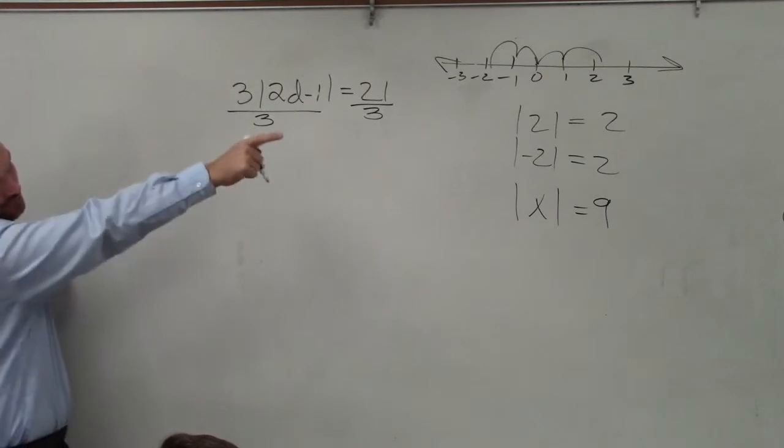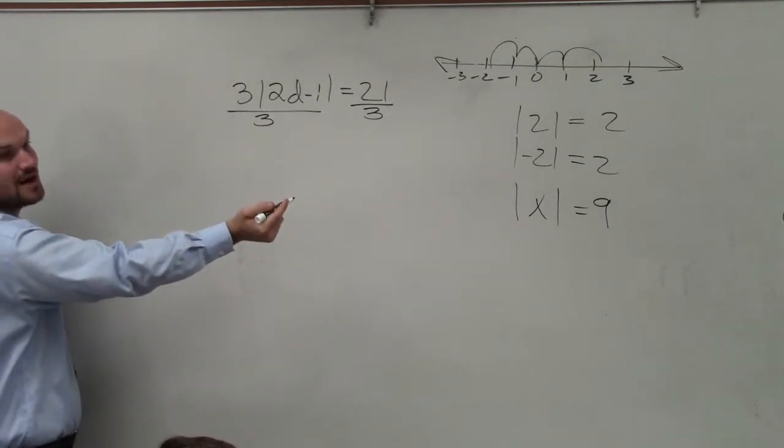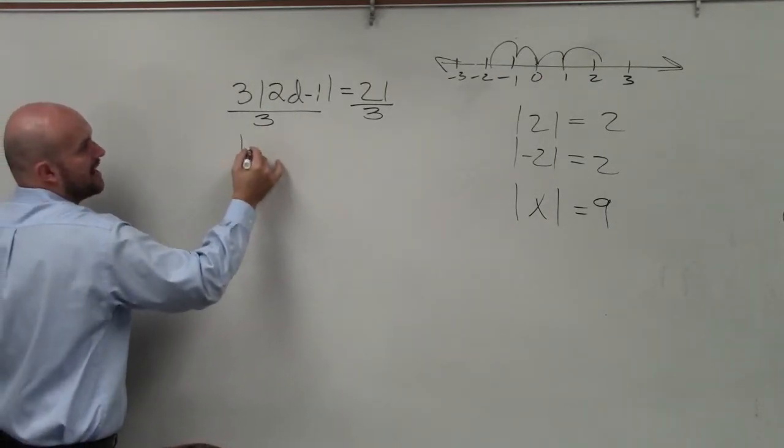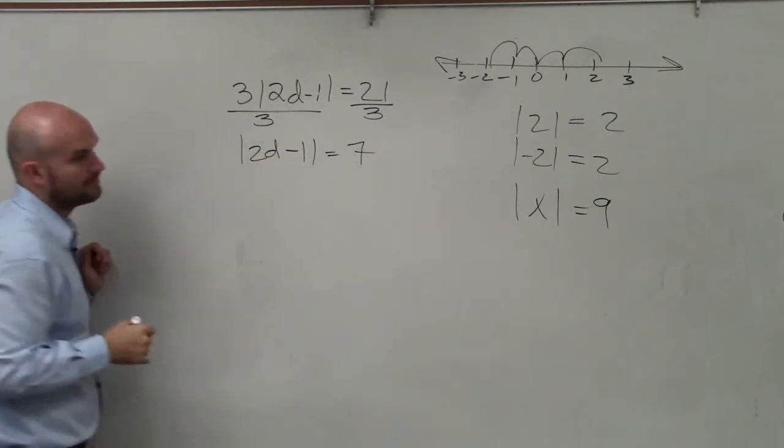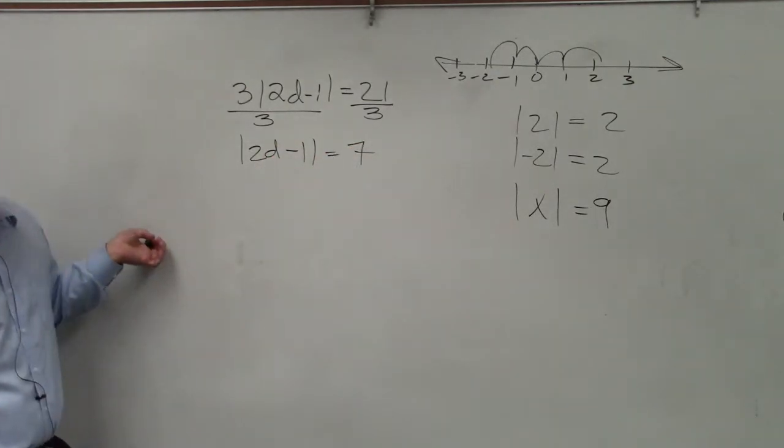So the first step, which I wrote down over there, is to isolate your absolute value sign. So then I have 2d minus 1 equals 7. So now that I've had it isolated,